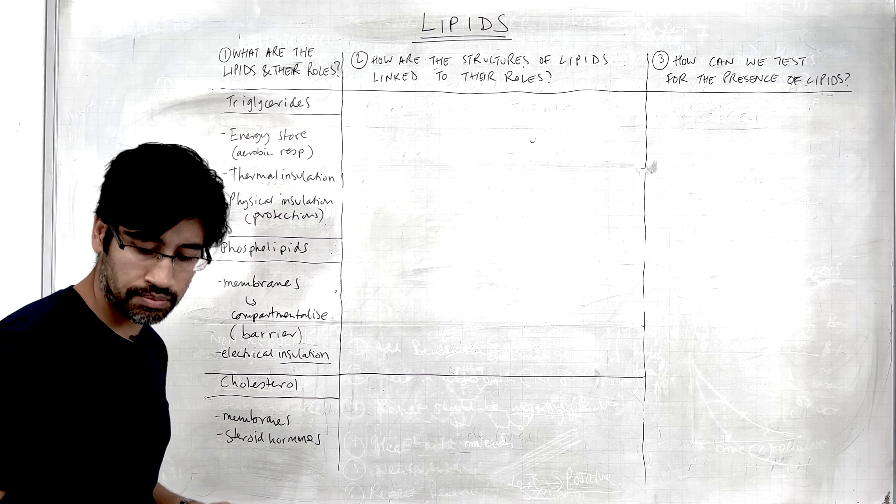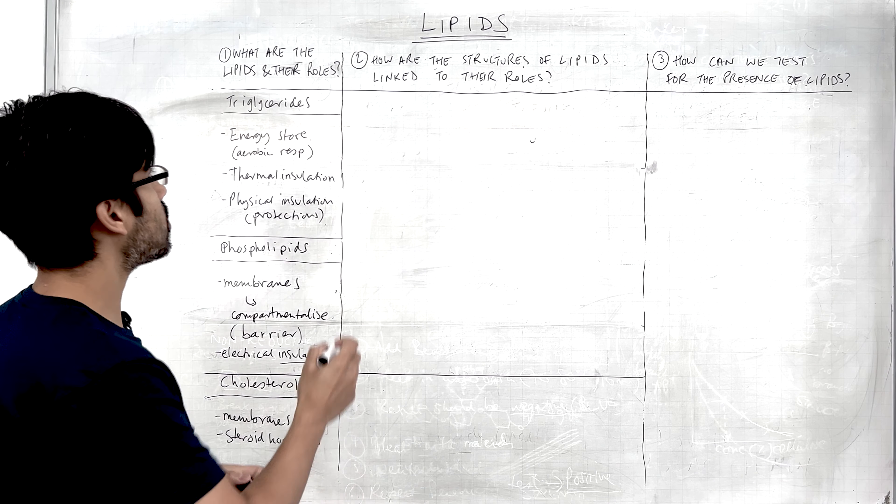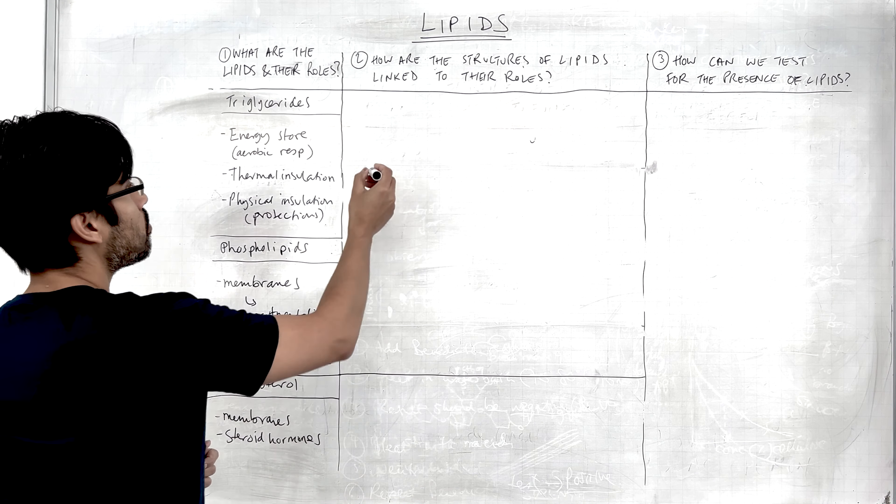So what are the lipids and their roles? The three types of lipids we need to know about are triglycerides, phospholipids, and finally cholesterol, which is an example of the sterols family of molecules. The point of these videos is to focus on the most essential things, and we absolutely need to know this — therefore I'm asking you to practice producing this information by yourself.